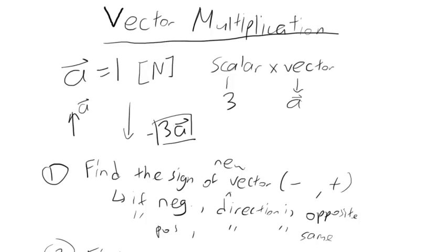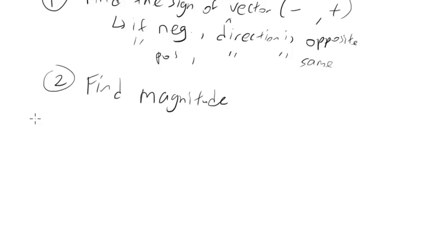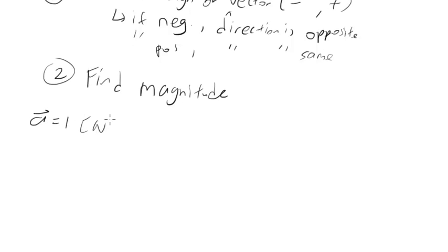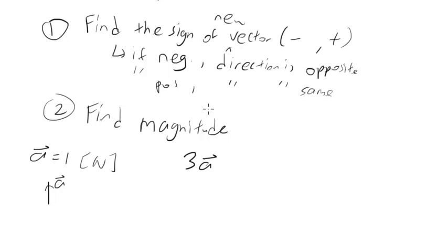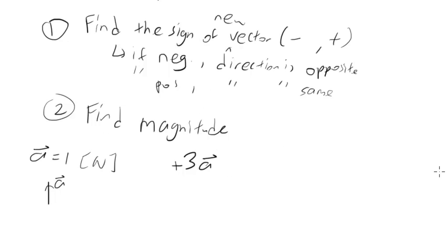So let's bring these down here. I'm just going to rewrite it, A equals to 1 north, and we're asked to find what 3A was. So let's refer back to our steps. Step number one, find the sign. And the sign in this case is positive 3. So we know that the vector of 3A is pointing in the north direction. Second step, find the magnitude.